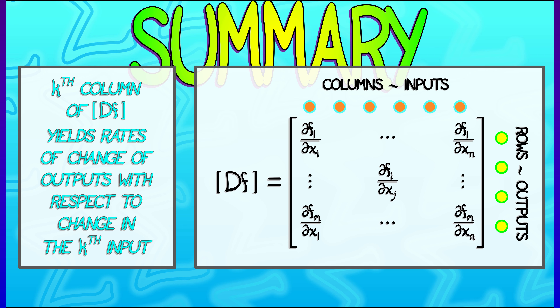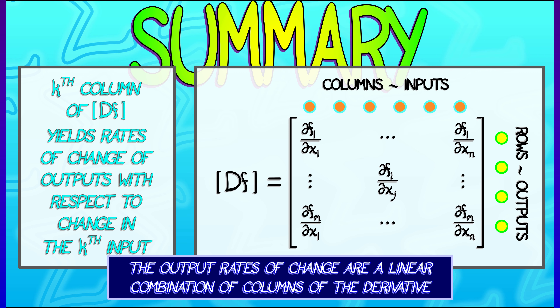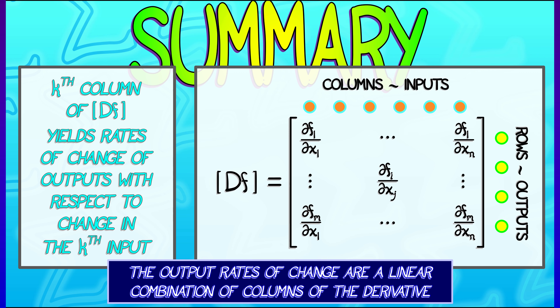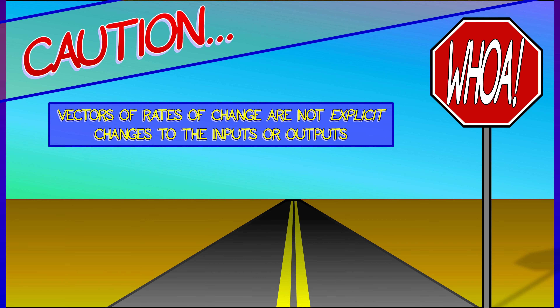More explicitly, the k-th column of the derivative is the rates of change of those outputs with respect to the change in the k-th input. And because the derivative is a linear transformation, the output rates of change are really a linear combination of these columns, scaled by the rates of change of the inputs.